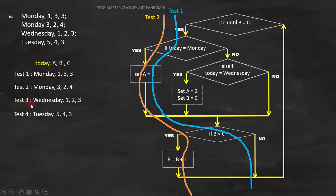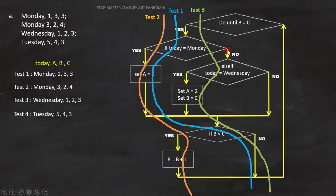Now let's analyze test 3: Wednesday, 1-2-3. Today is Wednesday, so this condition will become false. We will go to the else part of the code. And since today is Wednesday, this condition will become true. Next, set A equal to 2 and set B equals C will execute. Since B is now equal to C, this condition will fail. So this is the path we will cover by test 3.